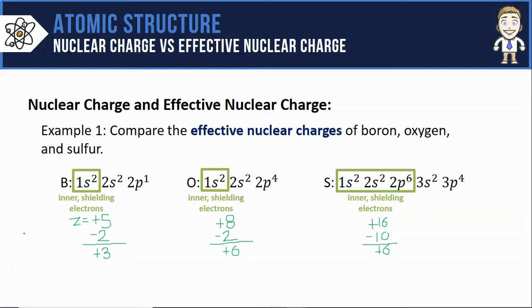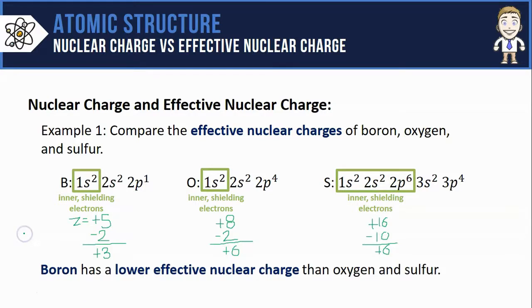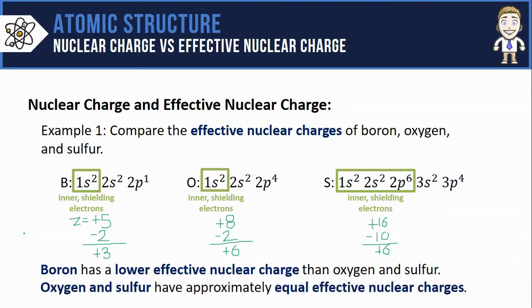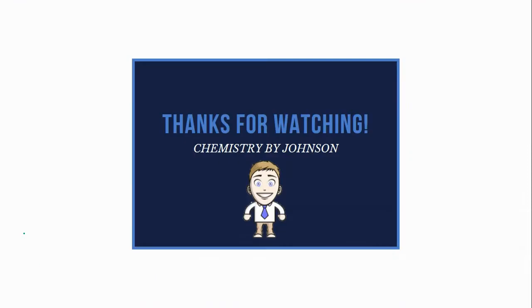So what kind of summaries can we make here? Well, we know that boron has a lower effective nuclear charge than oxygen and sulfur, and that oxygen and sulfur have approximately equal effective nuclear charges. That wraps it up for this video, thanks a lot for watching.